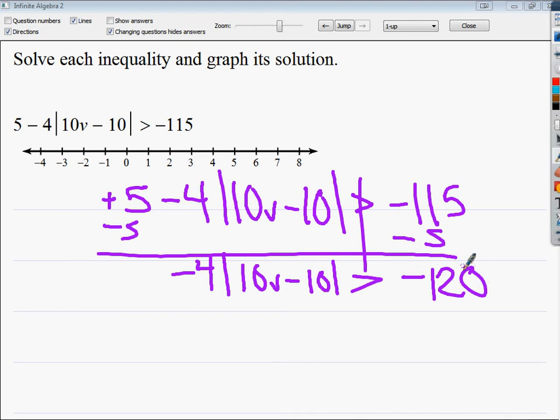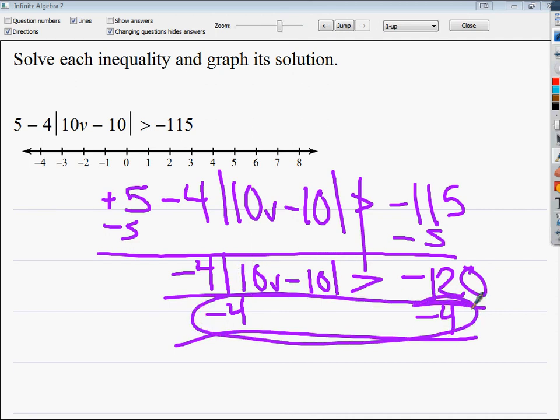So I subtract 5 and end up with negative 4 times the absolute value of 10b minus 10 is greater than negative 120. From here, I still need to get the absolute value by itself, so I'm going to get rid of times negative 4, and I'm going to do it by dividing. The thing is, kind of like if this was an x, if I'm dividing by it before, I need to flip the inequality over. So since this is negative, not this, not the answer, because it's not, I need to flip it over. So I'll end up with 30 here, but this needs to flip. Now, because I'm changing the perspective by dividing by negative here, now I can break it into 10b minus 10 is less than 30, 10b minus 10 is greater than negative 30, and I can split it out and get to my graph.